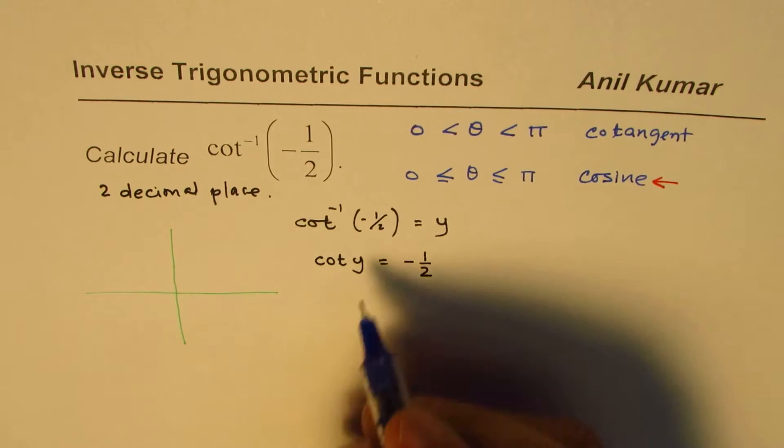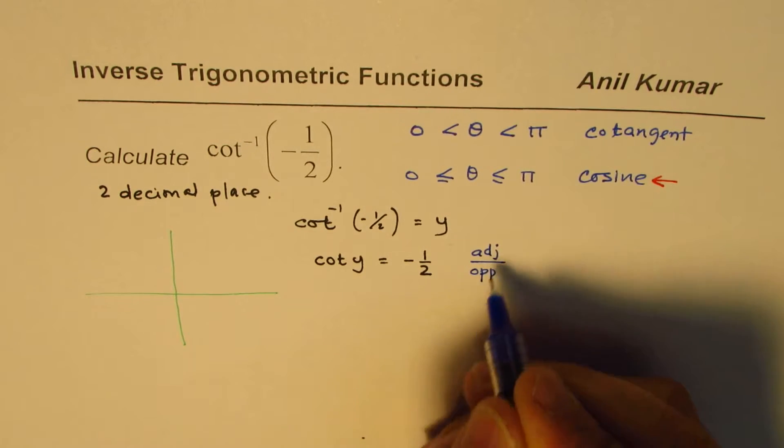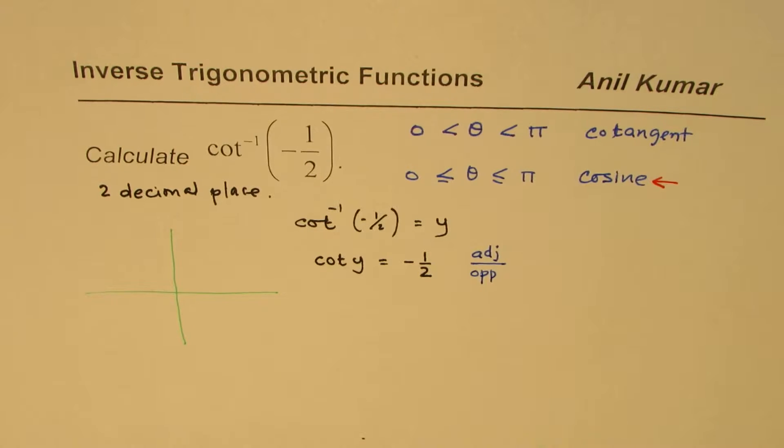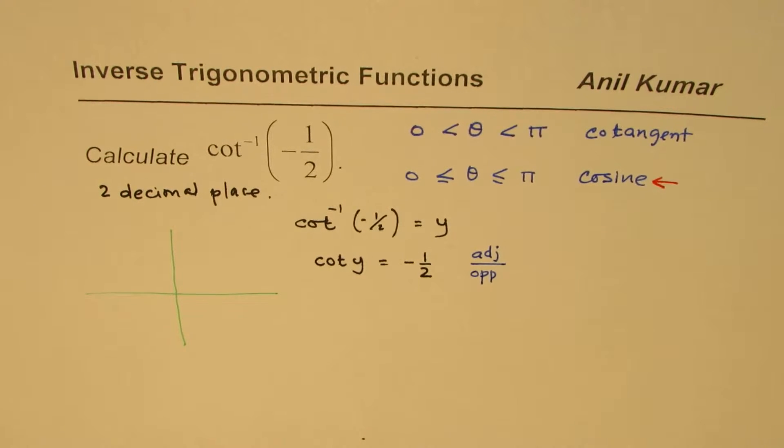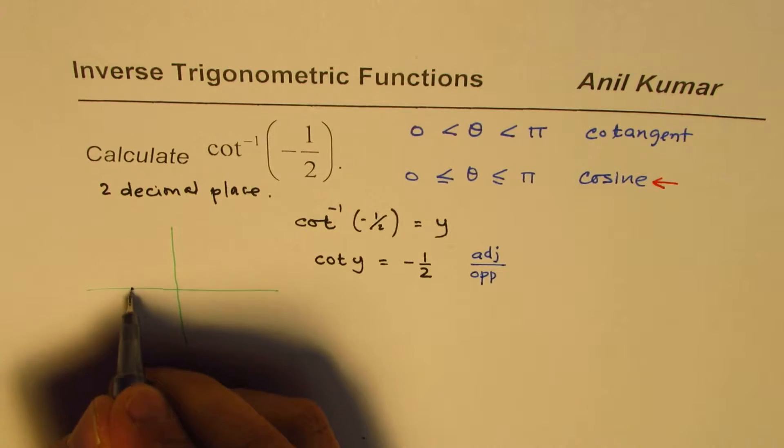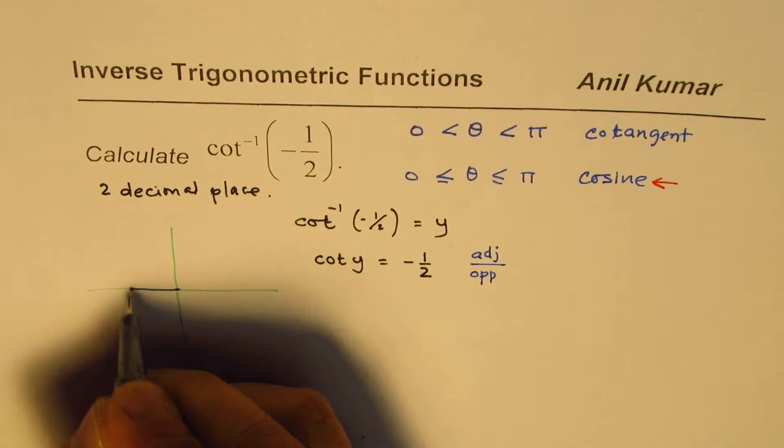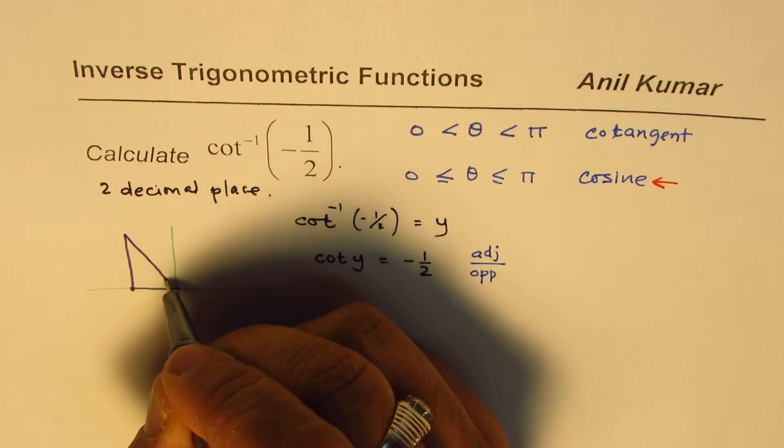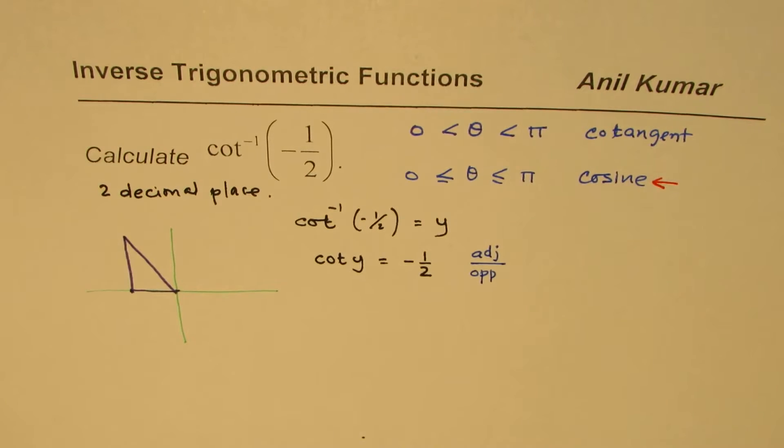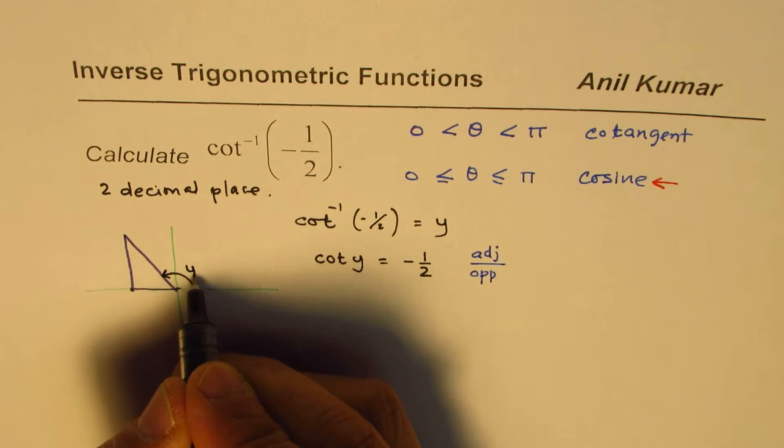Cot y equals to minus half means it is a ratio of adjacent side over opposite side, if you are considering the triangle. So, adjacent side is negative 1. Negative 1 in this scale means going this way. Negative 1 and the opposite is 2. So, it is a triangle which is kind of like this. That becomes the triangle for you, where the angle is this y angle.